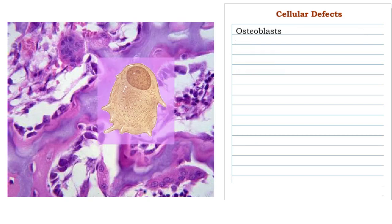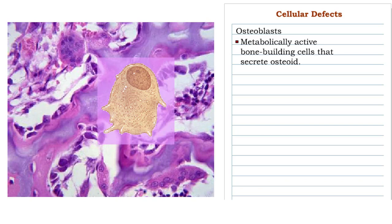Osteoblasts are metabolically active bone-building cells that secrete osteoid, the organic component of bone matrix. They are arranged into dense rows, covering the surfaces of newly formed bone matrix.